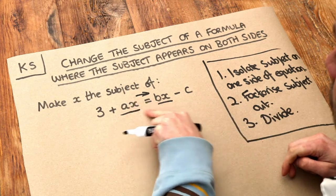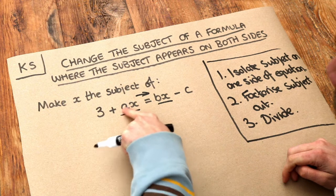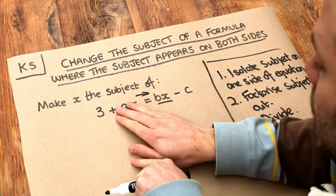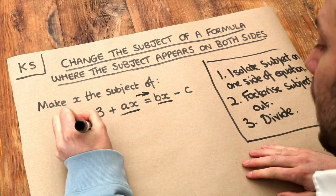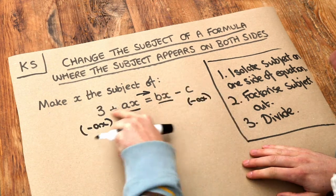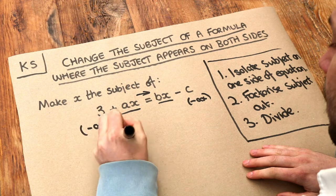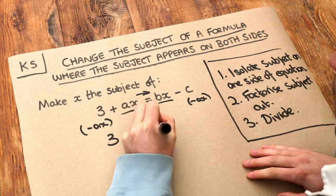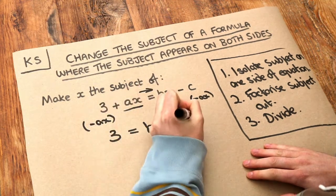So if I want to get all the x terms on the right hand side I don't want that x term on the left. To get rid of that plus ax I'm going to minus ax from both sides. If I do that, that gets rid of this plus ax just leaving 3. And then we've got bx minus c and then we've got minus ax.